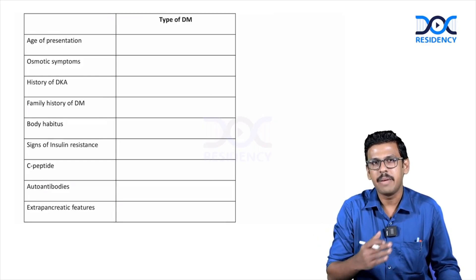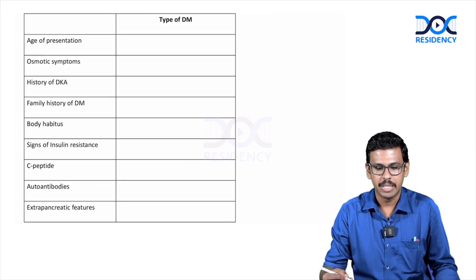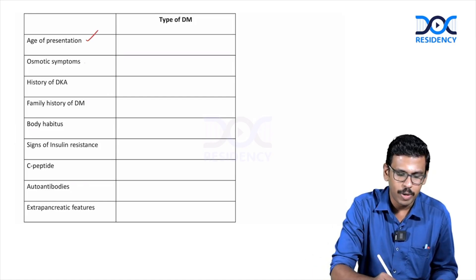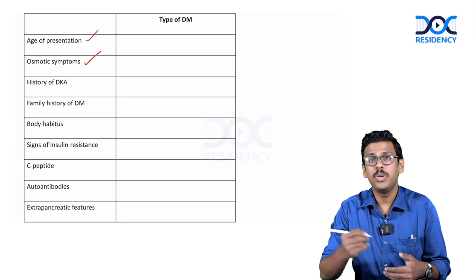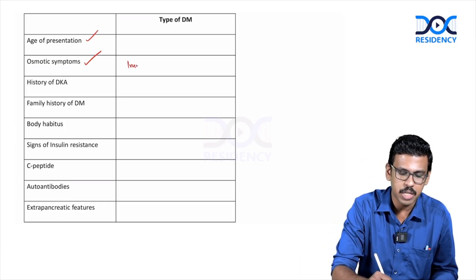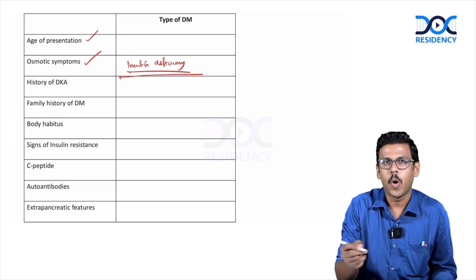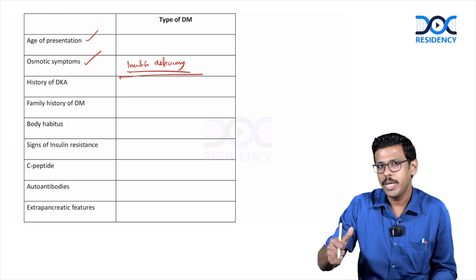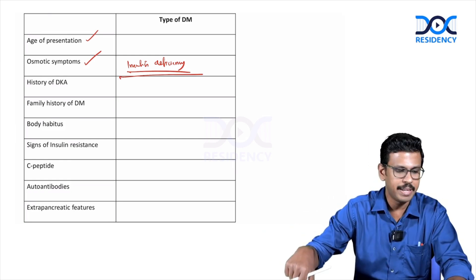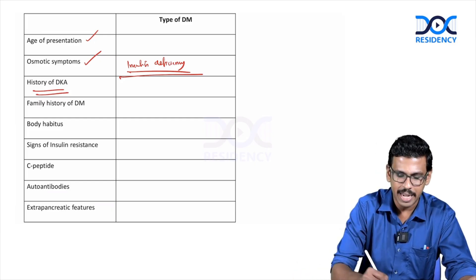When encountering a patient with diabetes, you try to answer key questions: the age of presentation, and whether the patient has osmotic symptoms — which indicate insulin deficiency. Osmotic symptoms occur only with symptomatic insulin deficiency, as typically seen in type 1 diabetes or type 2 diabetes with significant insulinopenia. A history of DKA would also be more common in patients with type 1 diabetes.